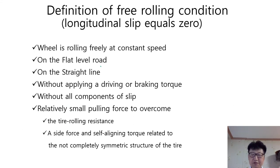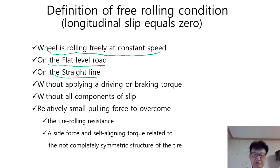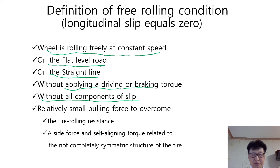A definition of the free rolling condition in which longitudinal slip equals zero can be summarized as follows: a wheel is rolling freely at constant speed on a flat level road, on a straight line, without applying driving or braking torque, without all components of slip, and with only a relatively small pulling force to overcome tire rolling resistance, side force, and self-aligning torque related to the not completely symmetric structure of the tire.